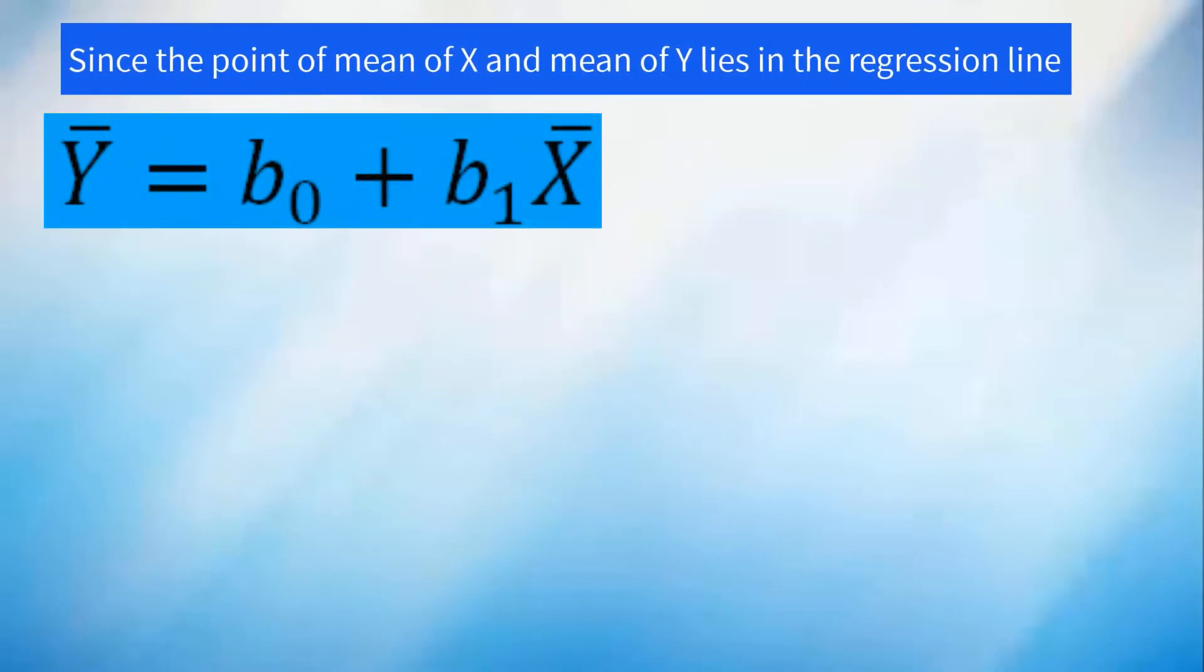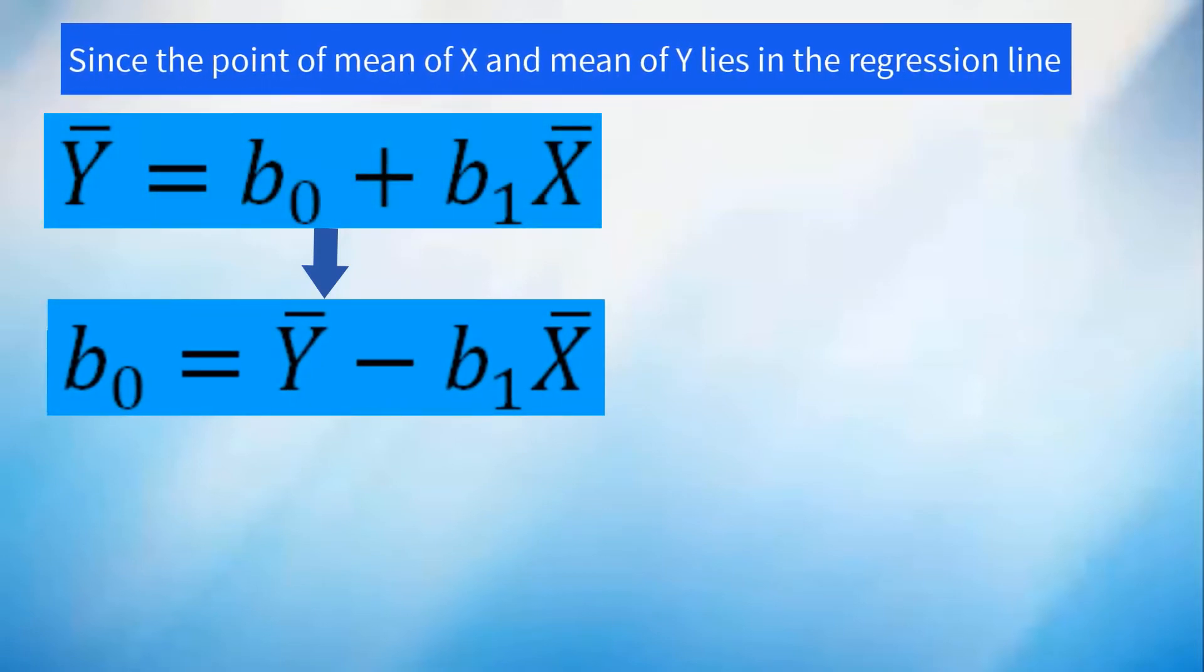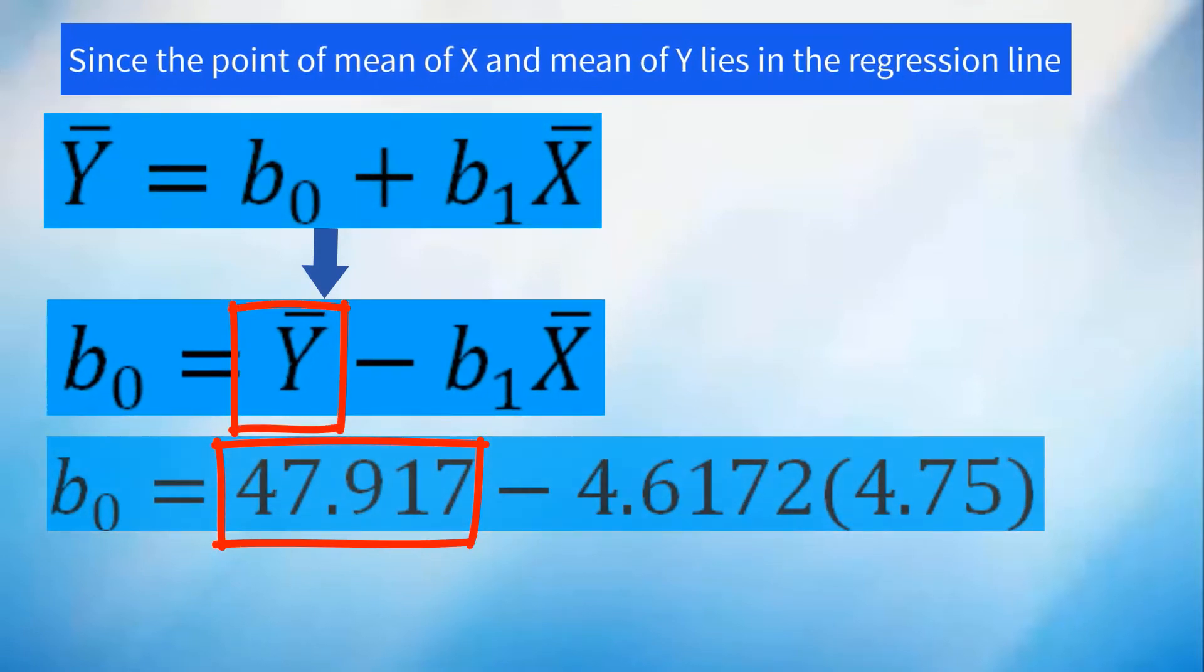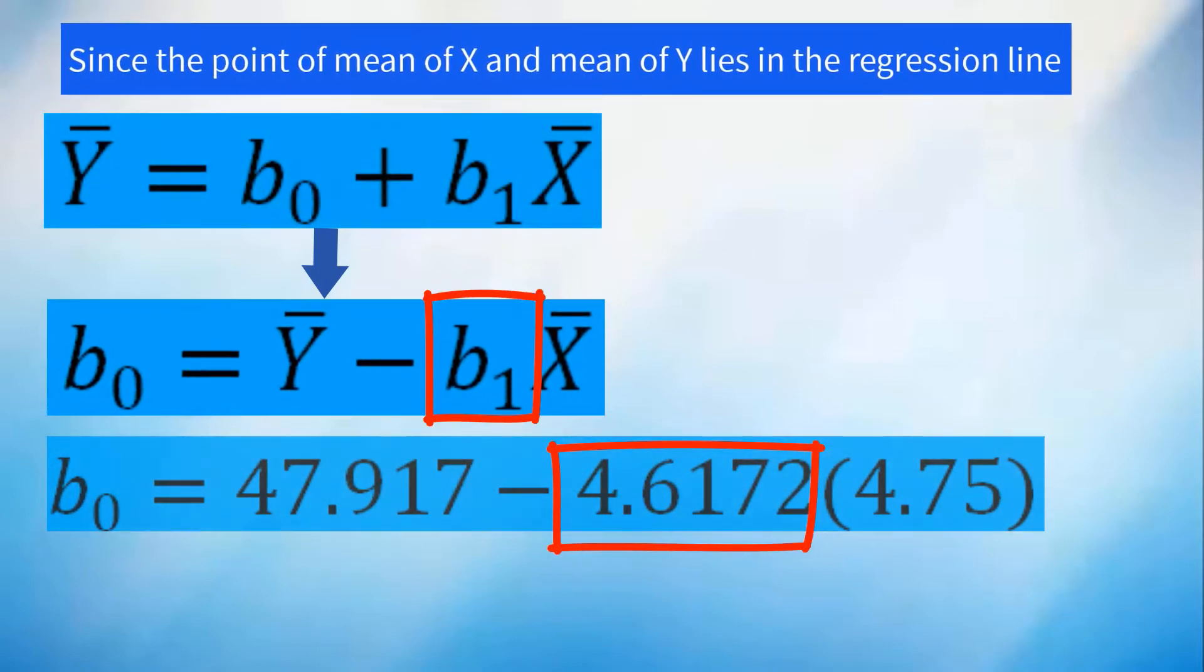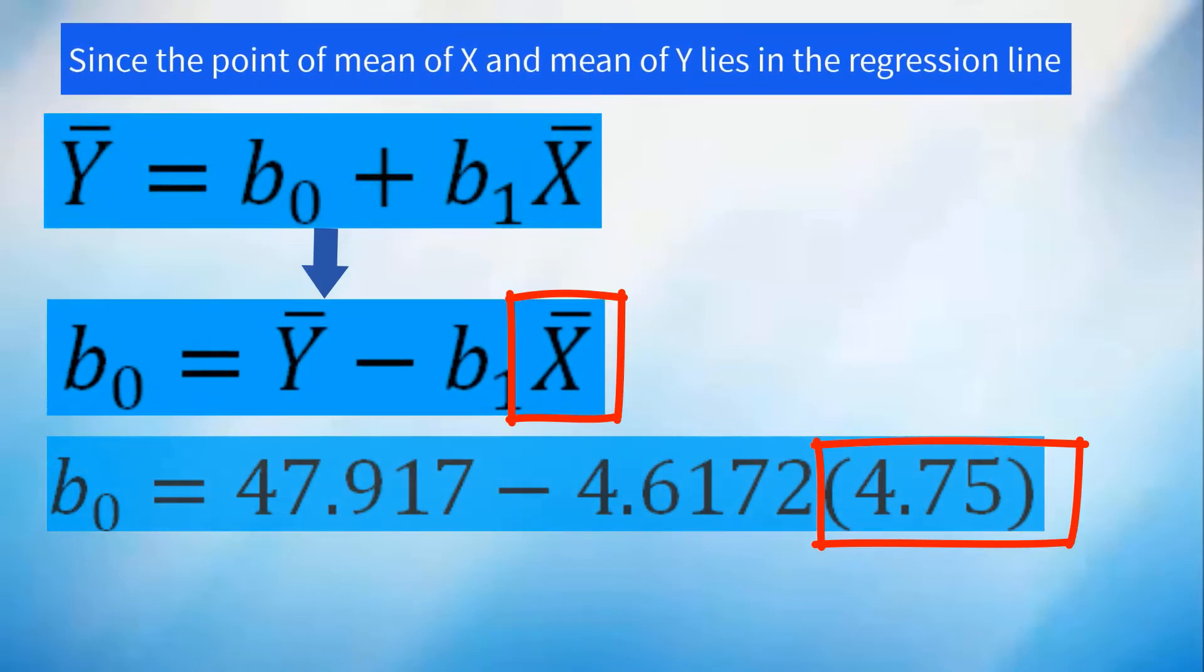Mean of y is equal to b0 plus b1 times mean of x. By transposition, b0 will be mean of y of 47.92 minus b1 of 4.6172 times mean of x of 4.75.